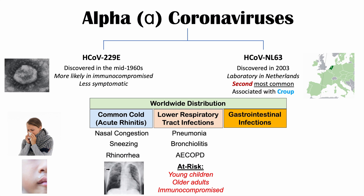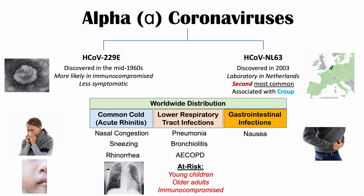The third set of symptoms these alpha coronaviruses cause are gastrointestinal symptoms including nausea, vomiting, and diarrhea, which may be a cause of acute viral gastroenteritis — though it's still not entirely clear. Research has shown that individuals with respiratory tract symptoms may also have diarrhea, and coronaviruses have been found in their stool. However, it's still not known if the coronavirus is causing these symptoms or if they are a co-pathogen to another virus actually causing them.